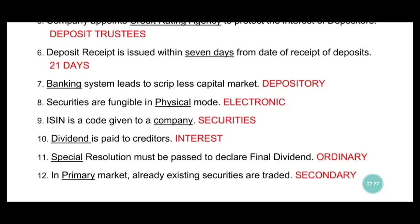Tenth, from chapter 10: dividend is paid to creditors. This is very easy — dividend is not paid to creditors. What is paid to creditors is interest. So the word 'dividend' is replaced by 'interest': interest is paid to creditors.